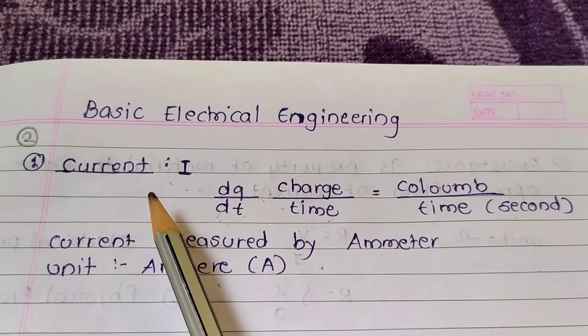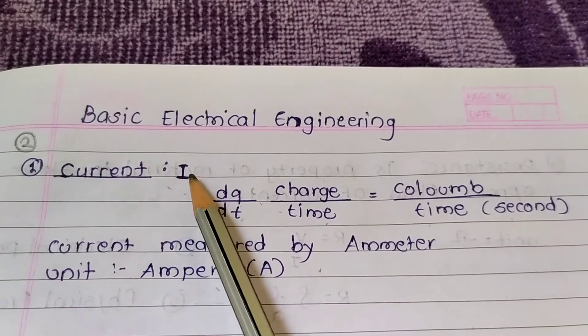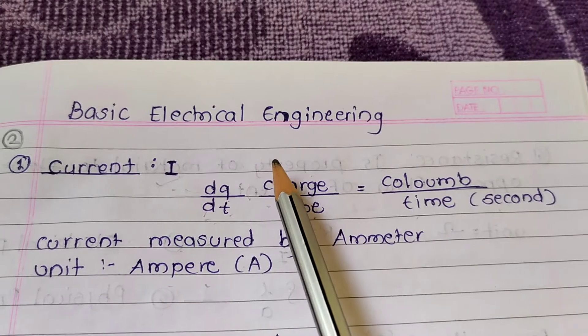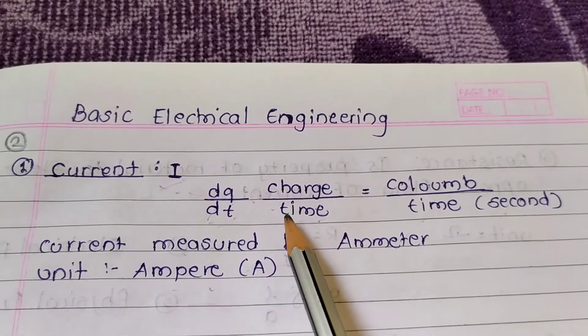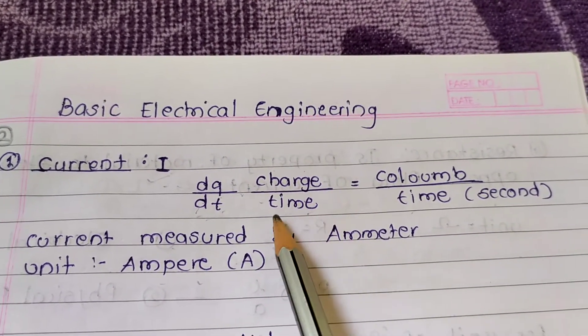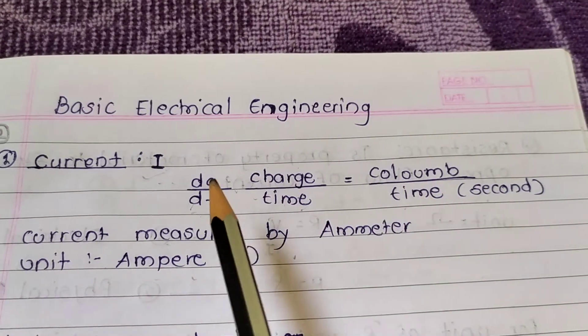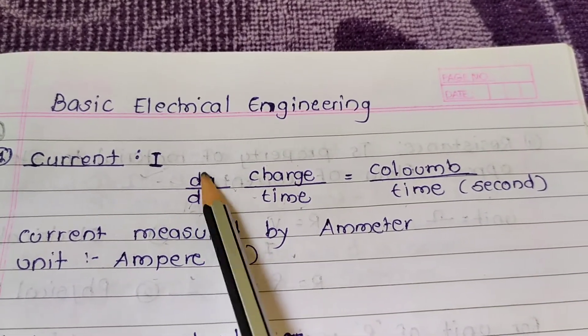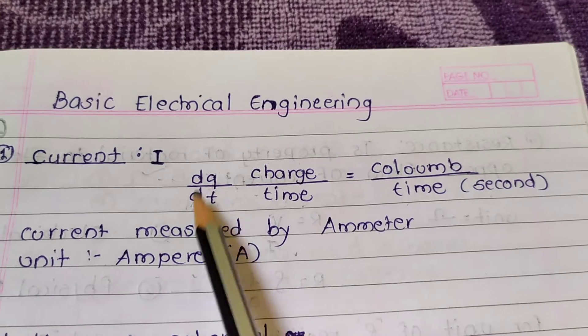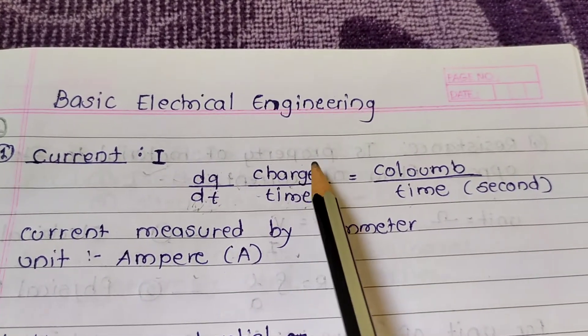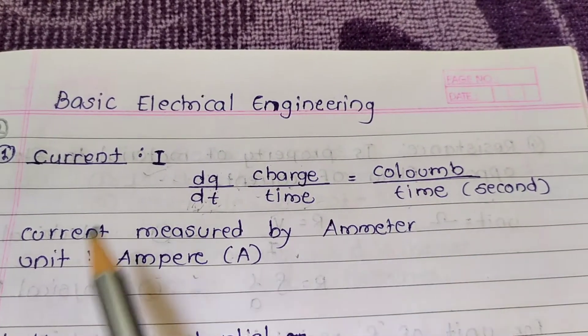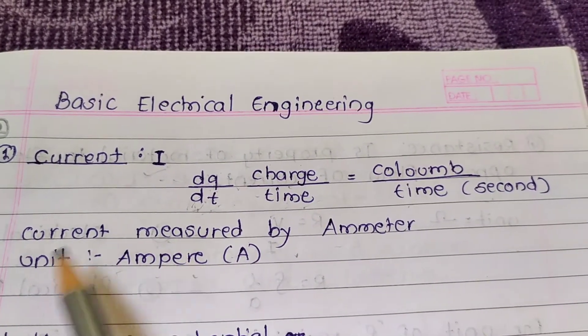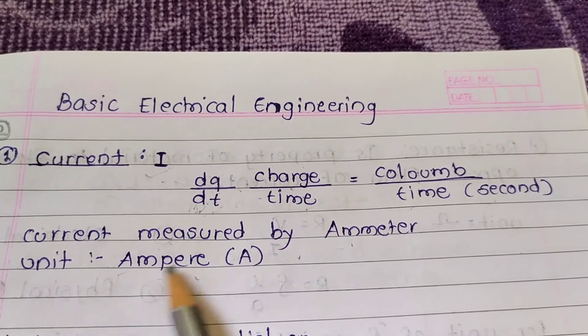But what is the current? Current denoted by I. When charge is flow and is measured per unit time, then charge per unit time is called as current. I = dQ/dT. Charge denoted by Q and time T. Charge measured in Coulomb, time in seconds. Current measured by ammeter and its unit is ampere.